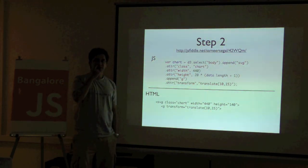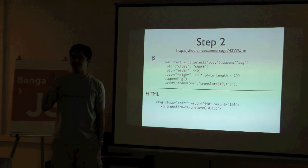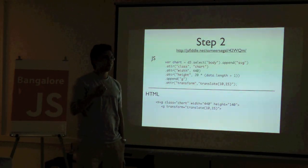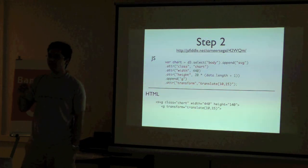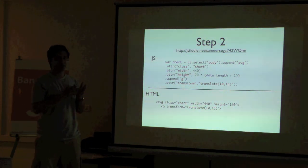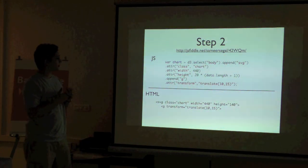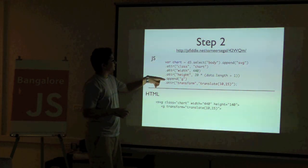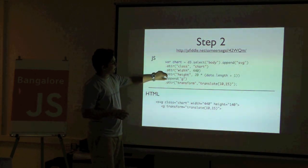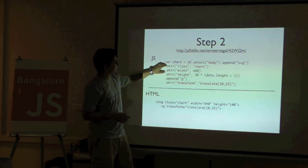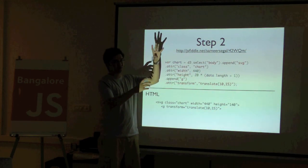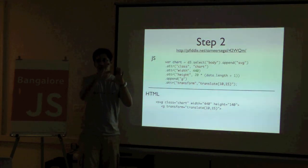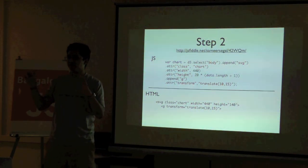Have you guys worked with SVGs? It's a new DOM element — it's really amazing because it gives you a lot more flexibility. Earlier we would draw rectangles with divs; now using SVGs you get better animation, it moves really smoothly, and there are amazing properties. The body is your HTML body, SVG is the container of the graph. Inside SVG we will create rectangles which become a bar graph. If I want to transform my graph — rotate it, give it a 3D effect — anything that needs to apply to all rectangles, I simply translate it.